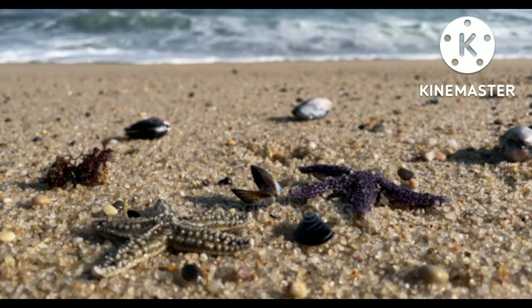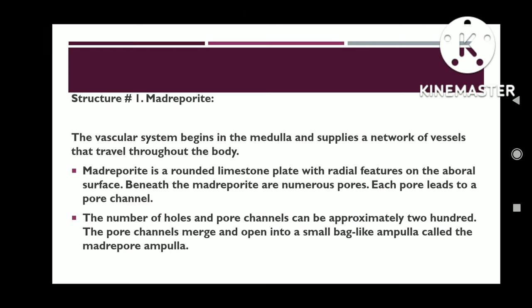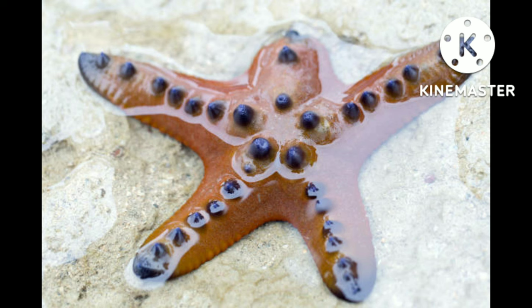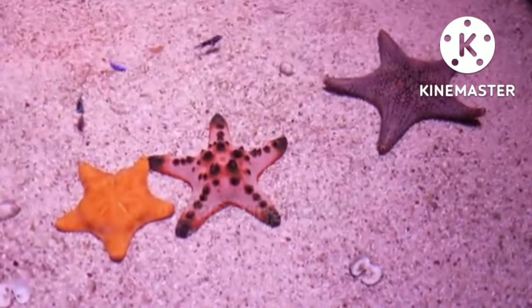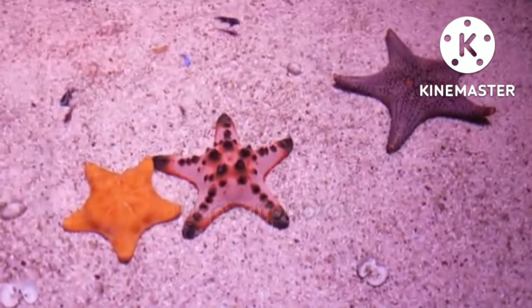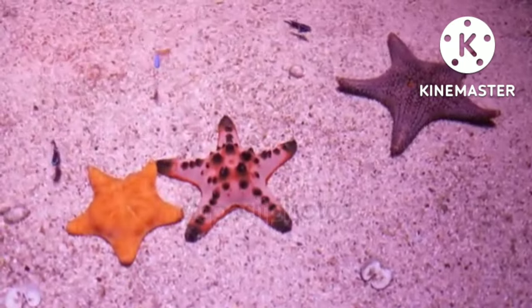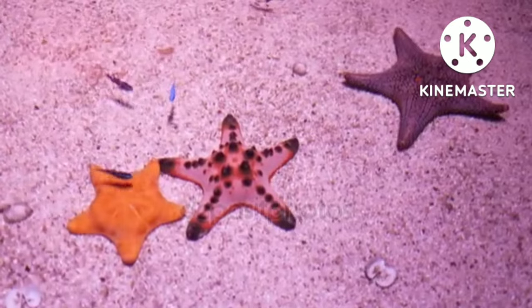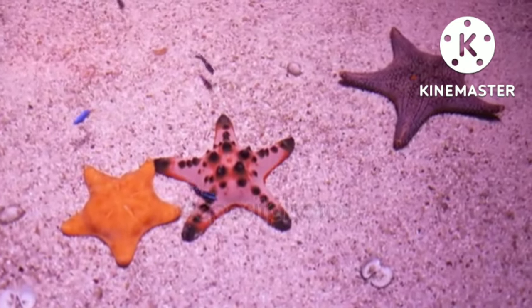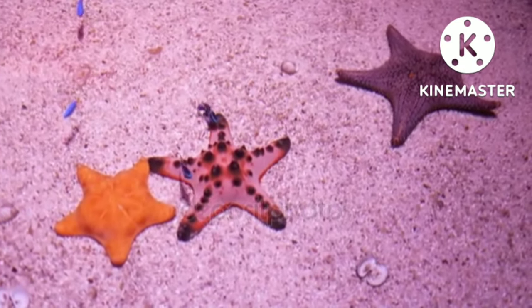Madreporite is a rounded limestone plate with radial features on the aboral surface. Beneath the madreporite are numerous pores; each pore leads to a pore channel. The number of holes and pore channels can be approximately 200. The pore channels merge and open into a small bag-like ampulla called the madreporic ampulla.